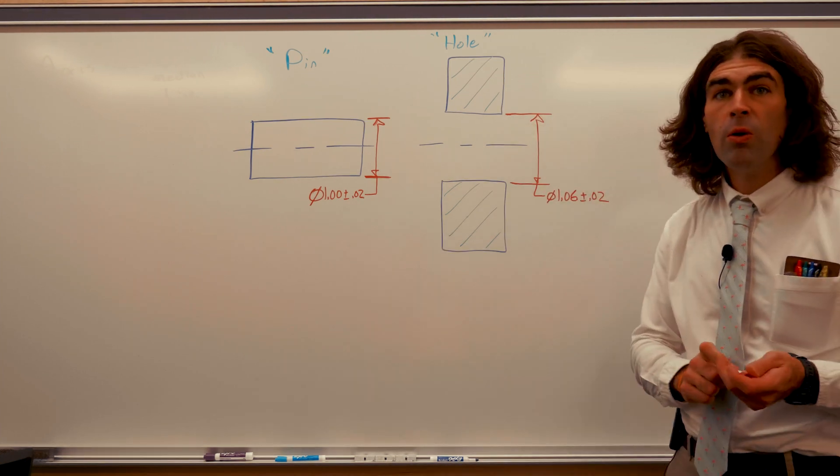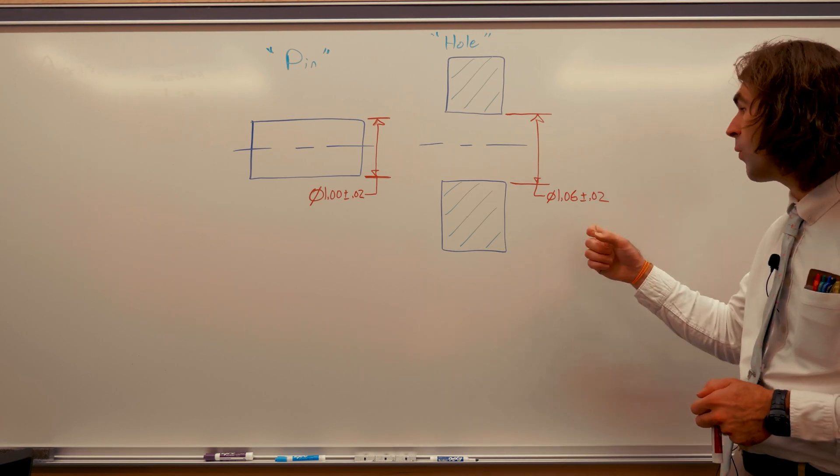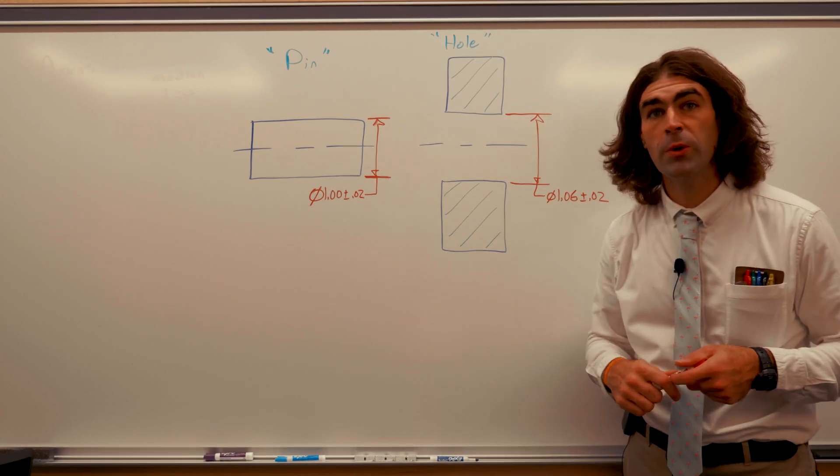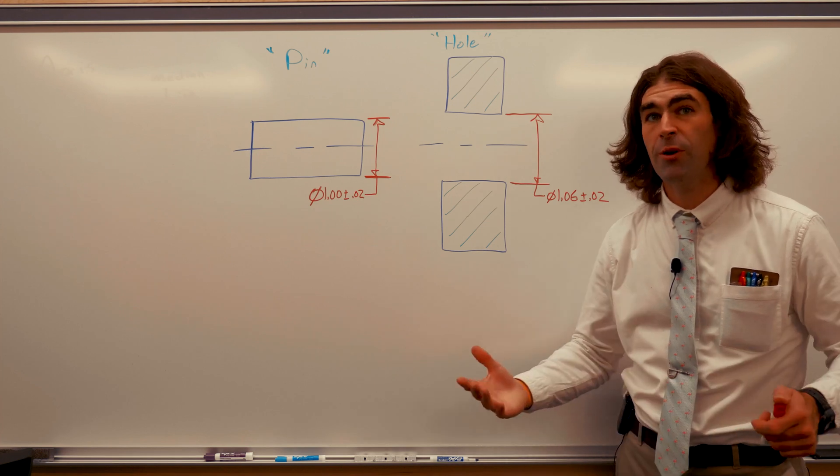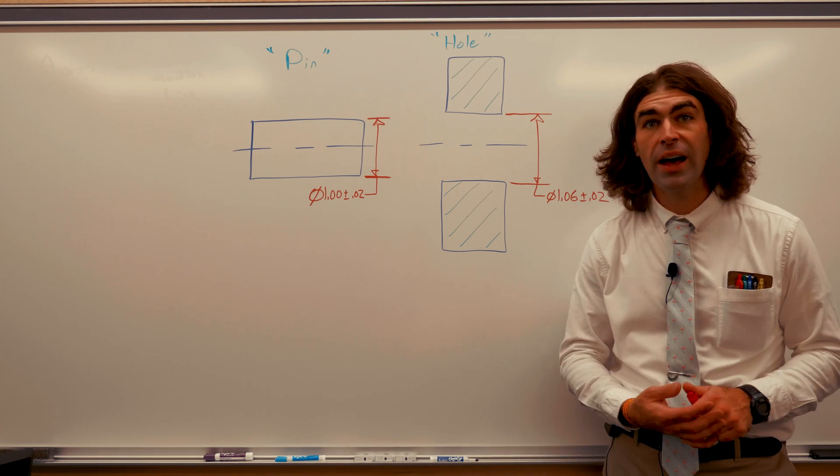So if we make the hole 1.06 plus or minus 20, the smallest hole is now 1.04 and the largest pin is 1.02. We'd always have 20 thousandths of allowance. That's worst case tolerancing and it's how most things are designed.